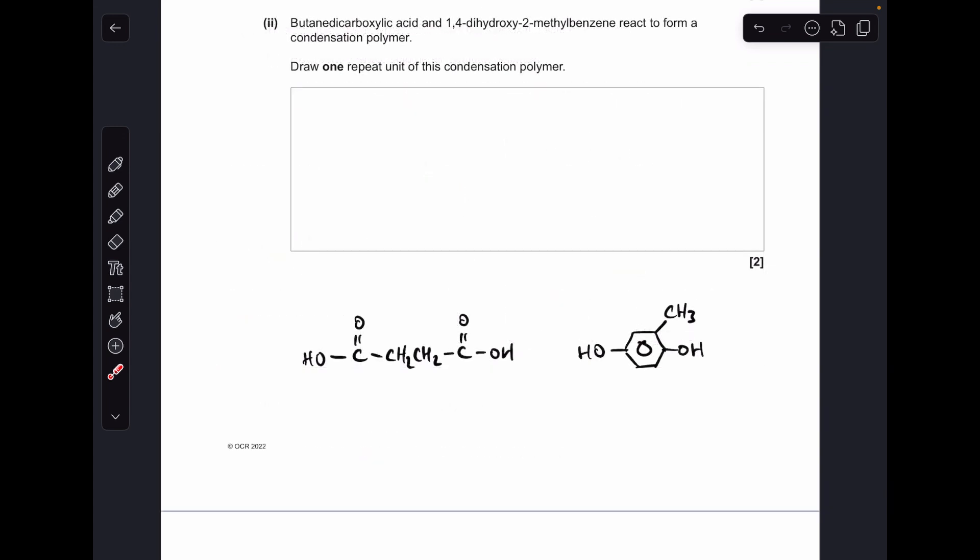And then for the next one, it's a condensation polymer. I've just drawn up the two monomers there. This is your butane-dicarboxylic acid, and this is your 1,4-dihydroxy-2-methylbenzene. So all we need to do is lasso out an OH group from the carboxyl group and an H from the OH group. Obviously, they're going to generate H2O, which means the one repeat unit of this condensation polymer looks like that.